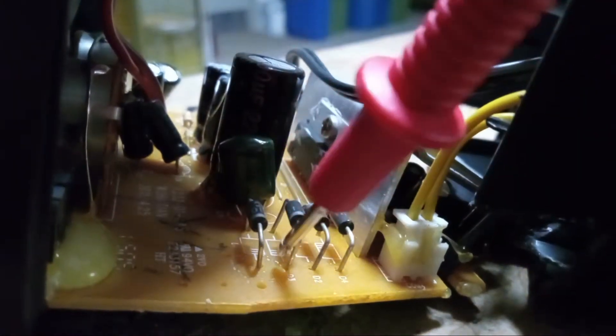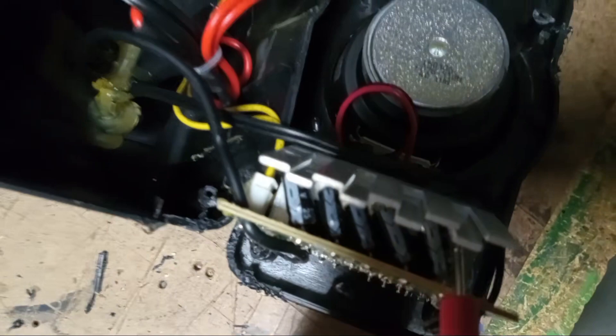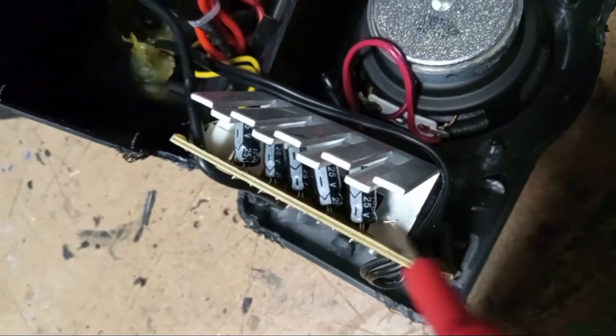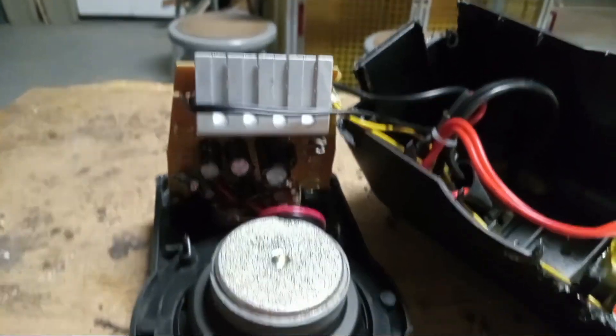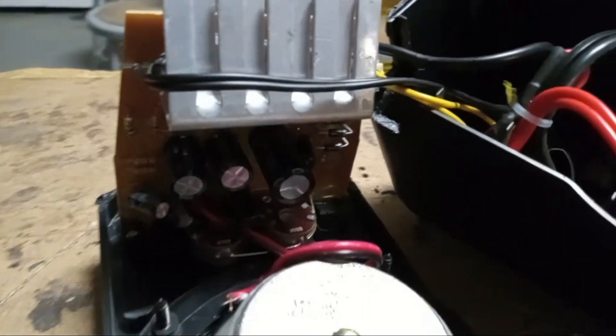There are quite a few electrolytic capacitors on the top of the PCB. Unfortunately though, the IC has no marking on it that I can read to get some sort of datasheet. And there's a considerably large heatsink over it. And on the bottom of the PCB, there are several SMD resistors and capacitors.